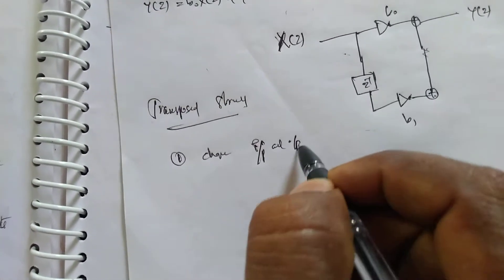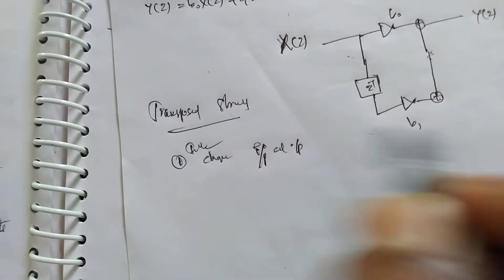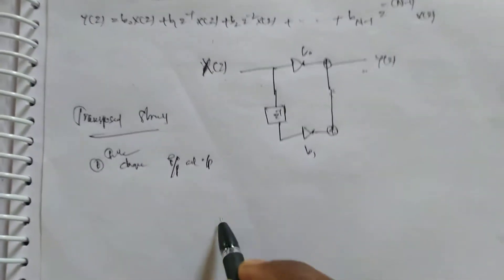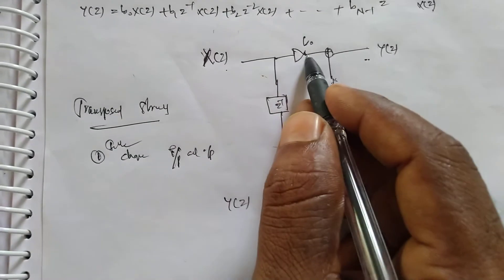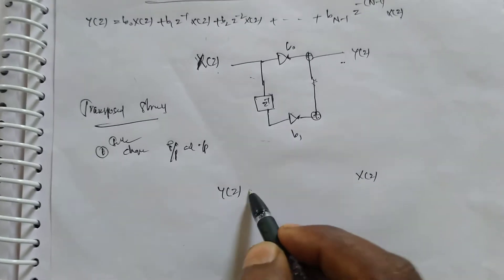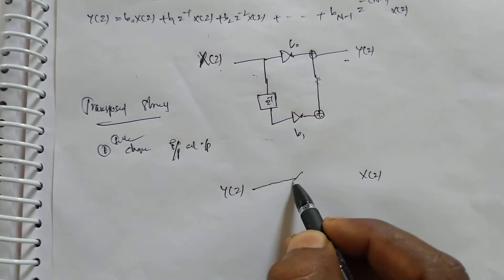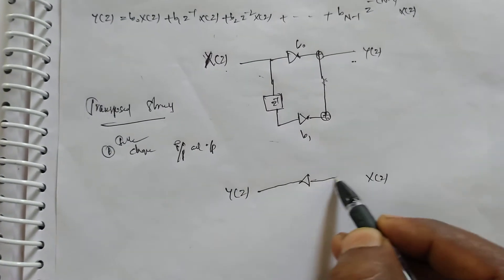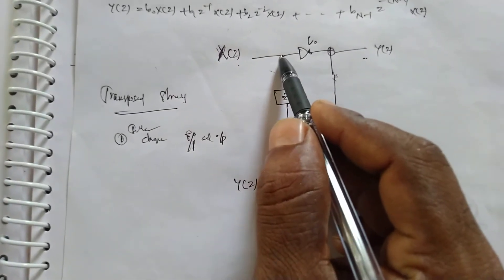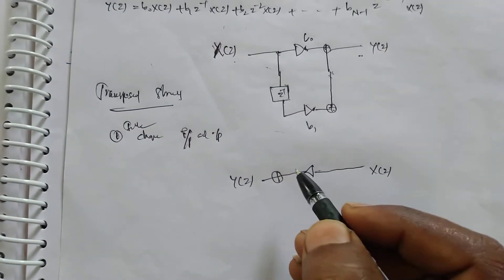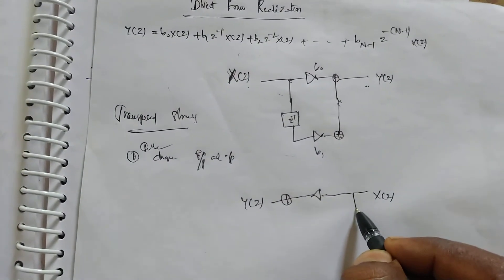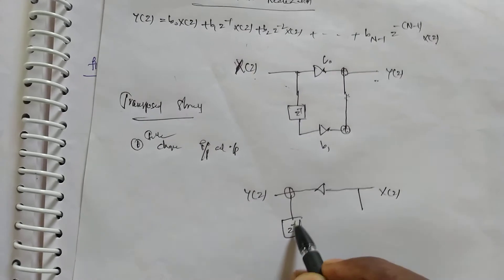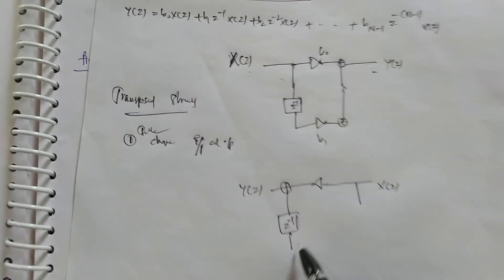In the transposed structure, we interchange the input and output: x(z) is replaced with y(z), so here y(z) becomes the input and x(z) becomes the output. We also need to change the branch direction. Then we interchange the pickoff point with the adder, replacing it accordingly. The delay component z-inverse remains the same but is also interchanged.